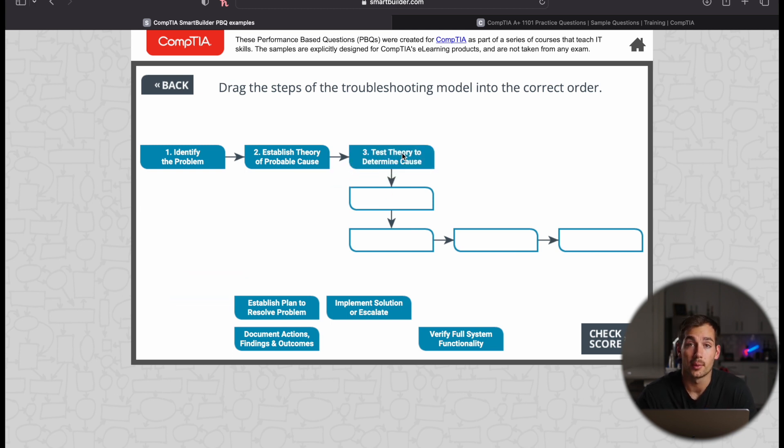The next step in this flowchart here is we're going to want to test that theory. So in the case of malware, we could run scans using Windows Command Prompt and the virus and threat protection that comes native with Windows. And during this phase, we're just going to want to verify whether our theory is correct.